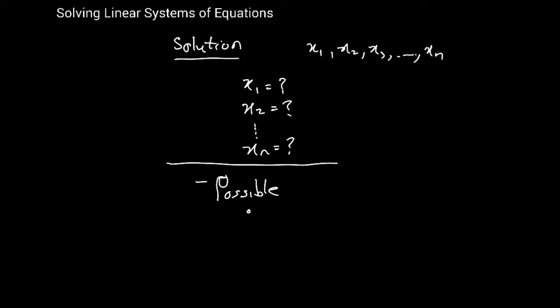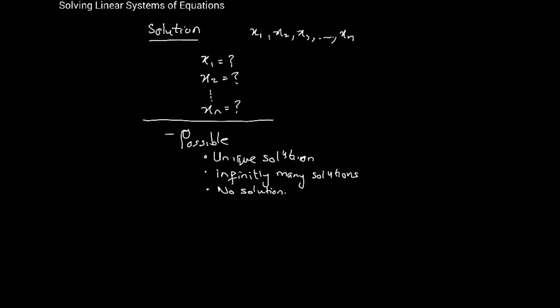What are the possible solutions? First of all, one of the possibilities is that we end up with a unique solution. The second possibility is that there are infinitely many solutions to the linear system of equations. And the last one is there is no solution. Let's get in a little bit more detail as to what we mean by these three possibilities.